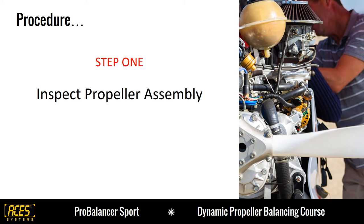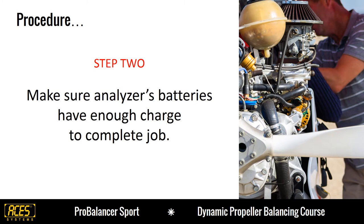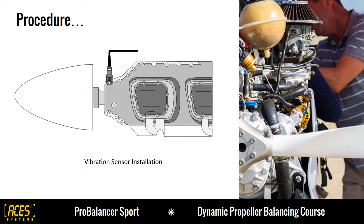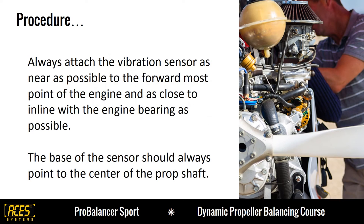To conduct the propeller balance job, start by inspecting your propeller assembly. You're looking for cracks, defects, damage, or anything else that doesn't look normal. Make sure you have freshly charged or new AA batteries in your analyzer before you begin. Next, attach the vibration sensor perpendicular to the rotating shaft of your propeller. Consult your manual for suggestions or requirements. Remember to always attach the vibration sensor as near as possible to the forwardmost point of the engine and as close to in line with the engine bearings as possible. The base of the sensor should always point to the center of the prop shaft.